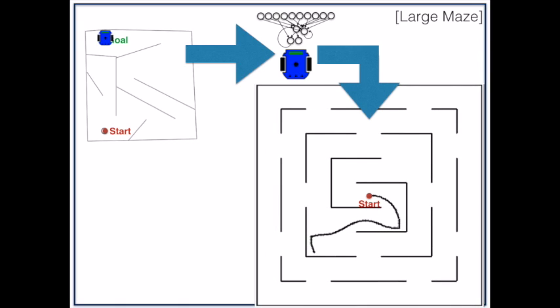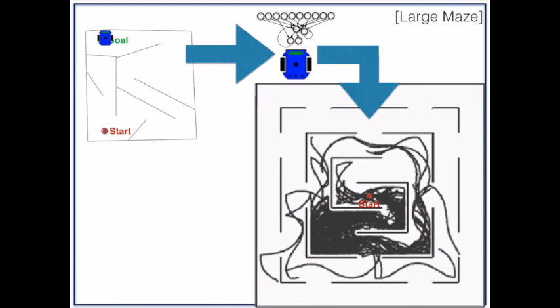Now here's the path of a single novelty search robot. It looks like it's able to navigate from the start location pretty well. Here's a path of 50 different novelty search robots. All of these robots look to be able to explore pretty well.